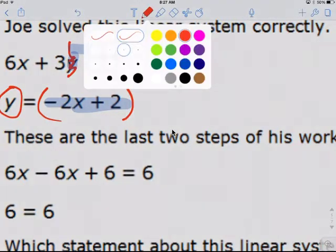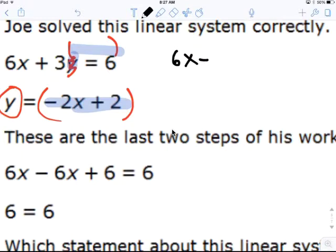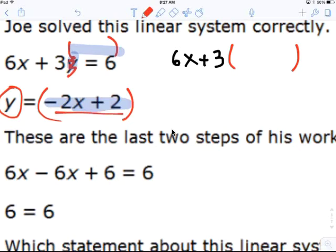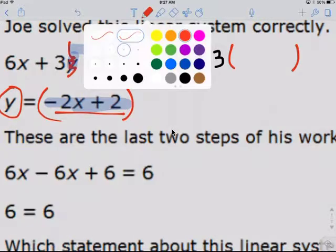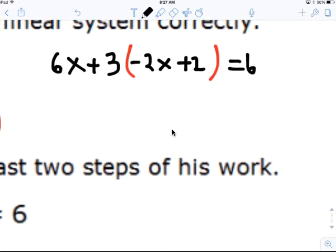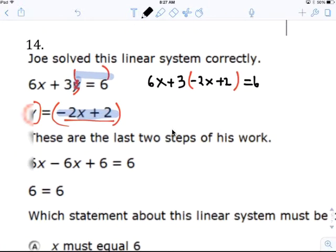So your problem is 6x plus 3. Instead of y, you substitute that into where y is. You get negative 2x plus 2 equals 6. And you solve that.